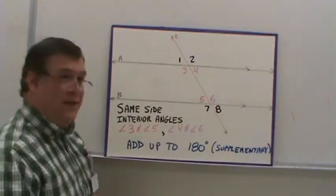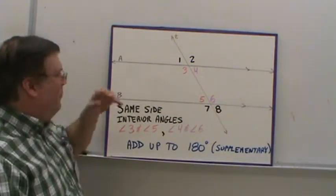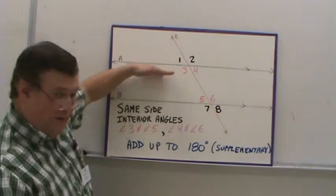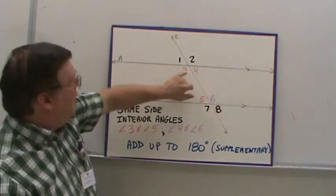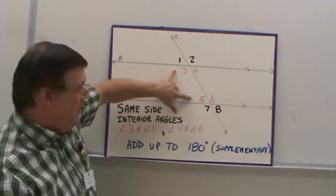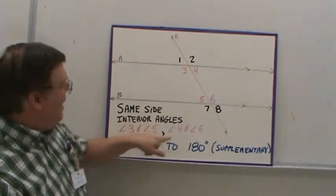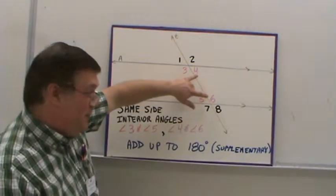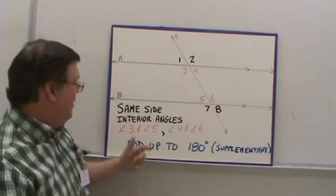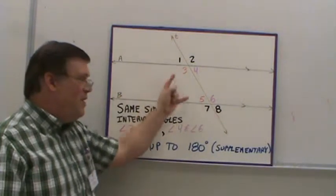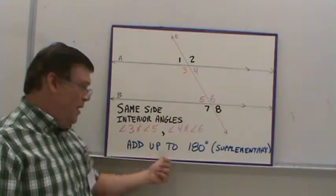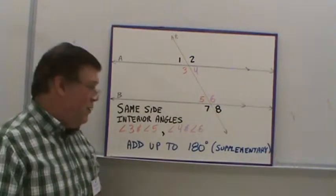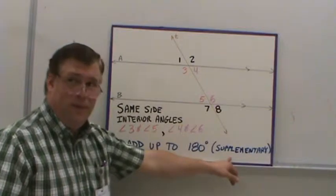A better word would be congruent. There's also same side interior angles — they are inside the parallel lines, in the interior, and on the same side of the transversal, but on opposite parallel lines. That makes angles three and five, and angles four and six, same side interior angles. This relationship is different from the others in that these angles are not going to be equal. However, they will add up to 180 degrees. Two angles that add up to 180 degrees are called supplementary angles.